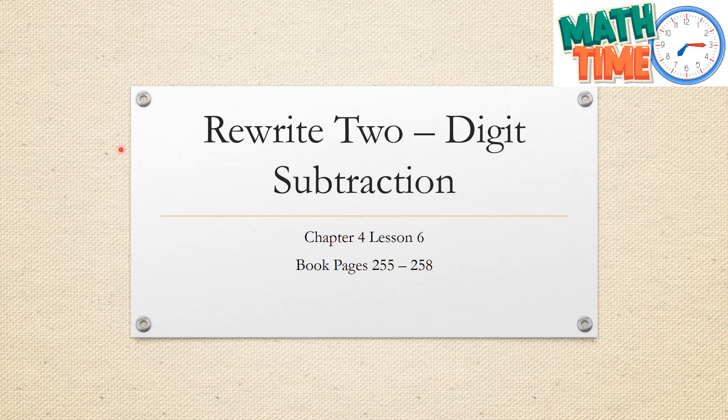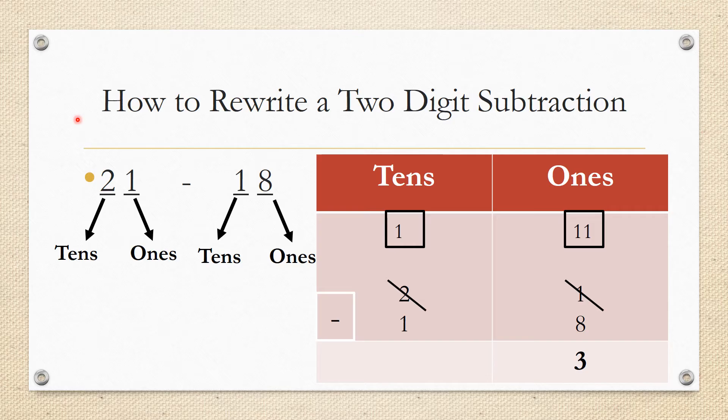Hello! Today's math lesson is about how to rewrite two-digit subtraction. As you can see in this example, I have 21 minus 18, so I'm going to look at my numbers and see if I have tens and ones.